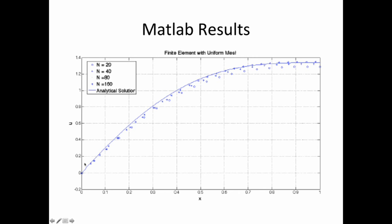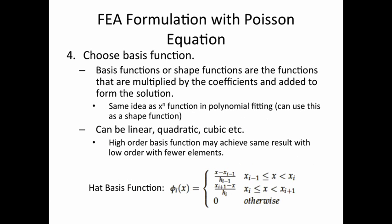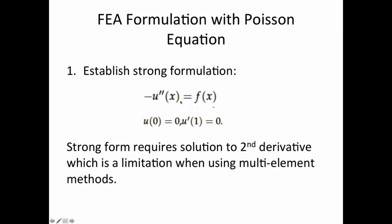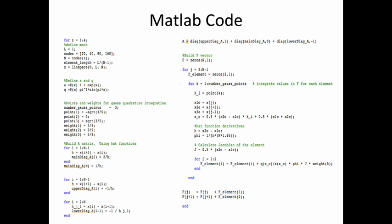These are the results. The straight line is the analytical solution - for this problem you can calculate it analytically. I used u''(x) = f(x) with the given boundary conditions, where f(x) was A over Q, with A equal to 1 plus epsilon*x and Q equal to pi squared sine(pi*x). The other solutions show results for different numbers of elements, so I didn't want to go into detail on that because I wanted to stay really general.